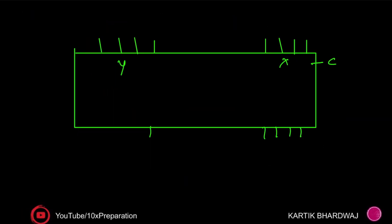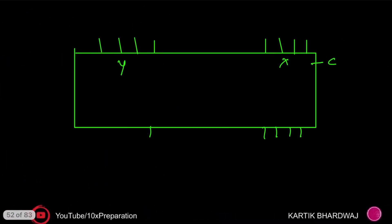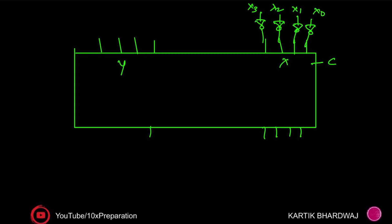Now coming back to the circuit: I am considering a 4-bit BCD input X3, X2, X1, X0. I need to pass it in complement form, so I take the NOT gate of these bits and feed them into the circuit. This gives me the one's complement of the BCD input.